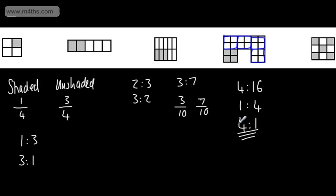If we look at this, we have five shaded and then four unshaded. So the ratio of shaded to unshaded is five to four. So when we're dealing with ratio, we're just looking at comparing the total parts.